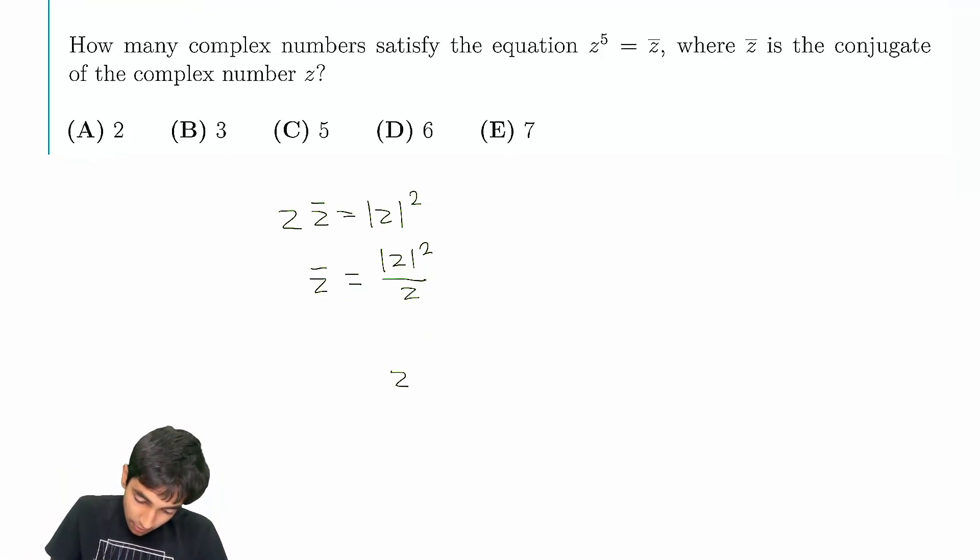So, we now have z to the 5 equals... if we can somehow find what the magnitude of z is, we can get a nice and simple substitution over here. So can we somehow find the magnitude of z?